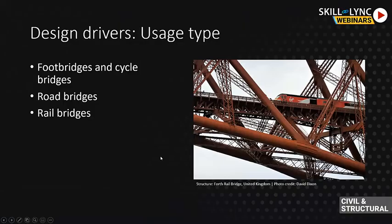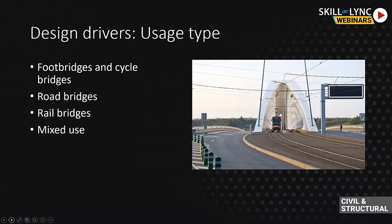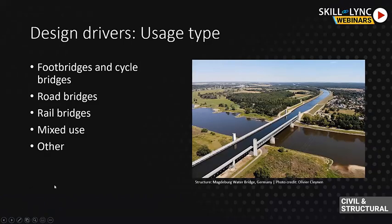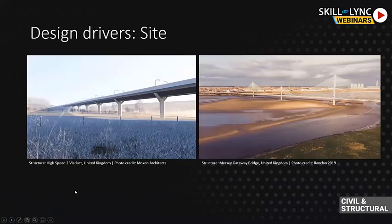Rail bridges can be really strategic and interesting. This is a very old bridge in Scotland called the Forth Bridge — have a look, it's an amazing structure, impressive for the time it was built. And sometimes you have mixed use: trams and roads, road and pedestrians, all sorts. Sometimes you have peculiar examples like a bridge over a bridge, or canal over canal. Now let's talk a little bit about the site.